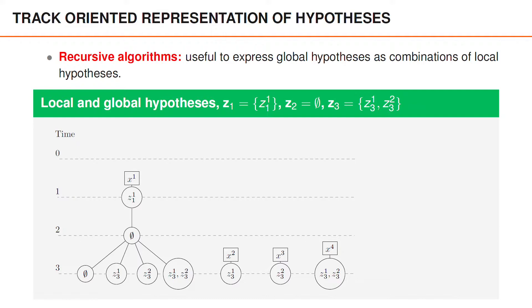Compared to the PMBMs for point objects, we now have two new local hypotheses, where both measurements at time 3 are from the same object. There are five global hypotheses, and they can all be expressed as combinations of these local hypotheses.